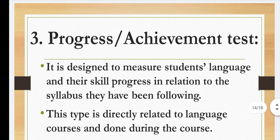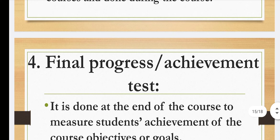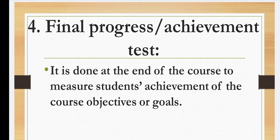Next is the progress or achievement test. It is designed to measure students' language and skill progress in relation to the syllabus they have been following. It is designed so that a child's progress within their syllabus can be seen. This type is directly related to language courses and done during the course — as you teach, you keep checking. Next is the final progress or achievement test — as the name suggests, the teacher measures the student's achievement at the end of the course.